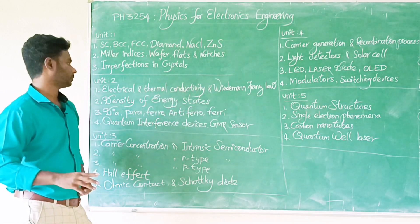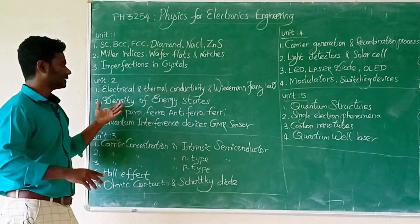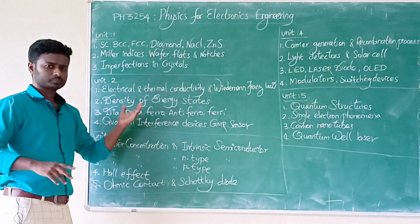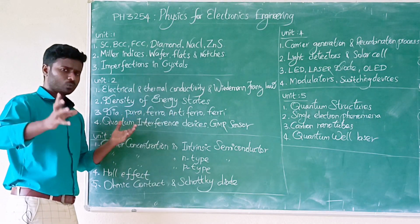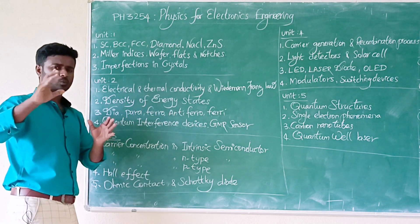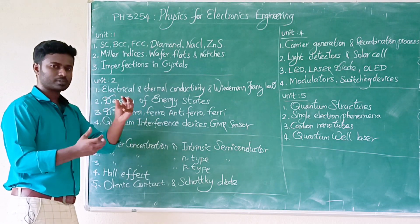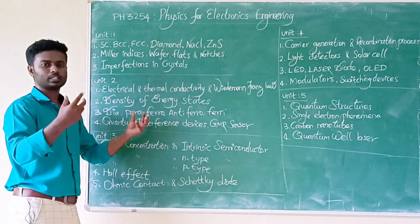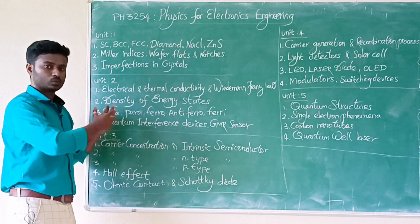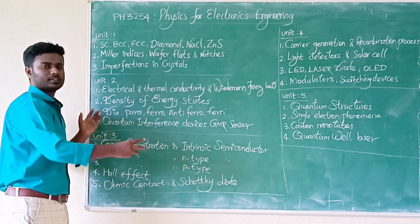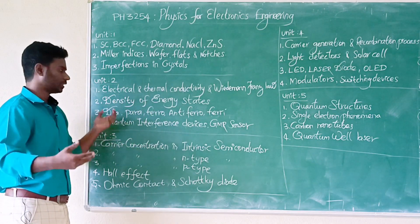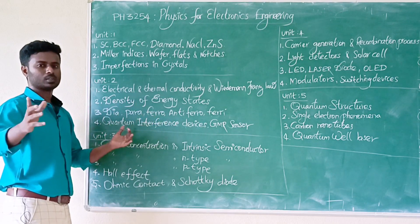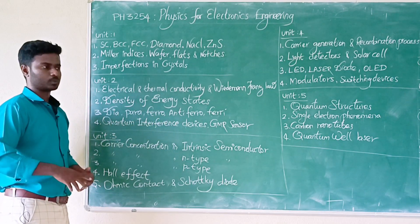Next: density of energy states. One-eighth of a sphere in k-space gives the total density. Multiply to get the density of energy states Z(E). Also note the Fermi energy level E_F.